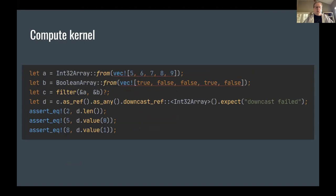This is an example of using a compute kernel. We have two arrays — A is an array of Int32, which are the real values we want to operate on, and then we're creating a Boolean array with some Boolean values. Then we call a filter kernel, which filters the integer array based on the Boolean values provided. The result is another Int32 array. You can see we're downcasting — there's a trait for that — and we downcast to a specific type to access the values within the array.